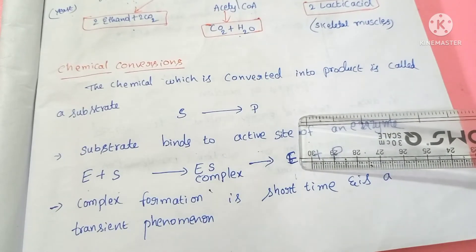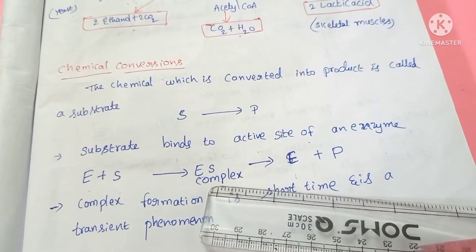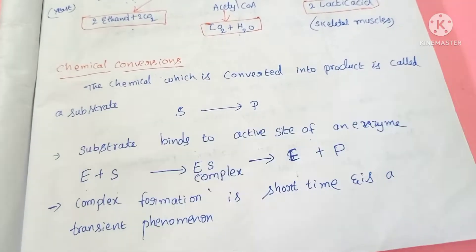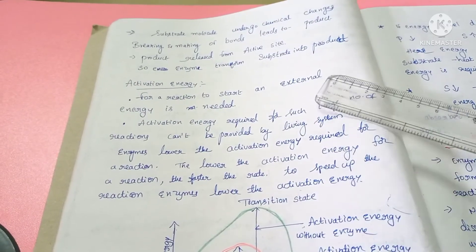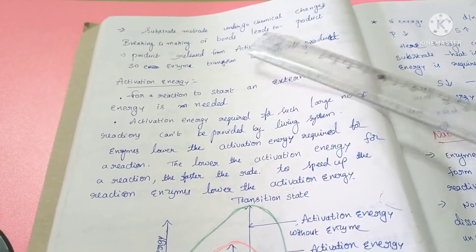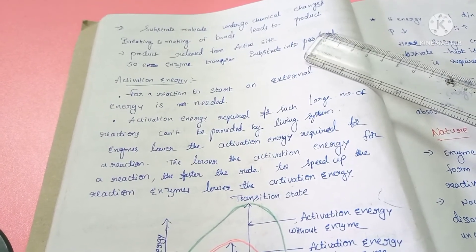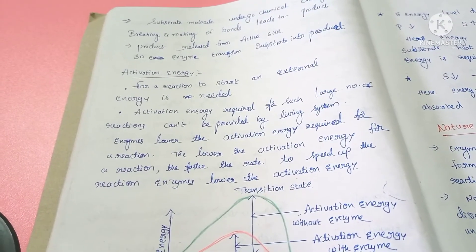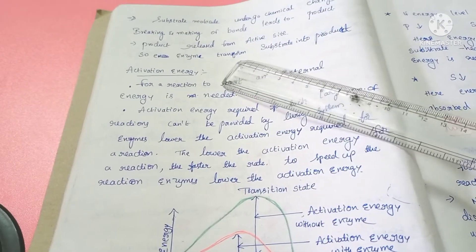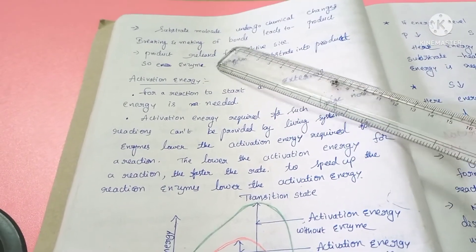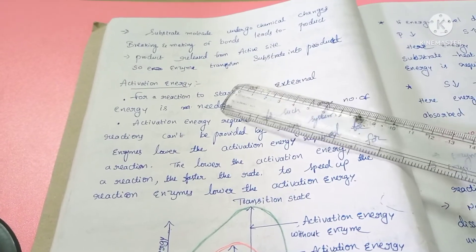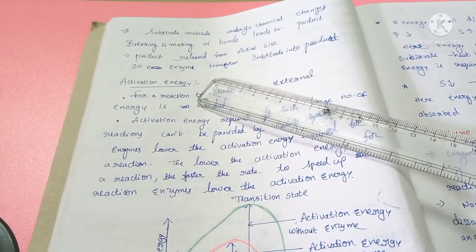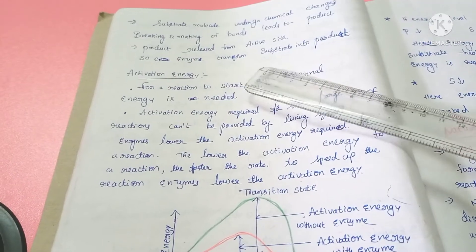The enzyme-substrate complex formation is very short-lived, and this phenomenon is known as a transient phenomenon. In the enzyme-substrate complex, the substrate molecule undergoes chemical changes at the active site — the bonds present in the substrate get broken and new bonds are created, leading to the formation of the product. This product is then released from the active site of the enzyme, which transforms the substrate into the product.